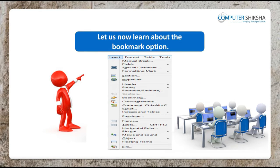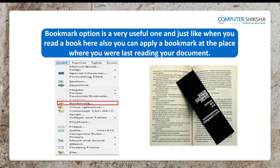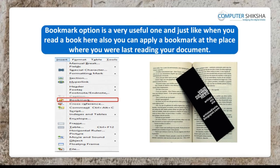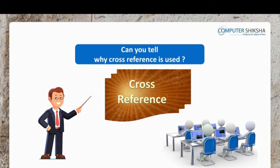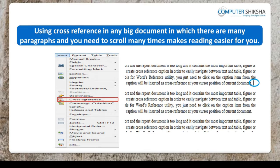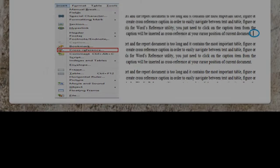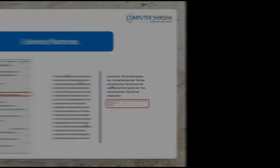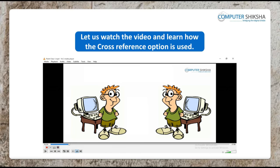Let us now learn about the bookmark option. Do you know why we use the bookmark option? Bookmark option is very useful, and just like when you read a book, here also you can apply a bookmark at the place where you were last reading your document. We will also now learn about cross-referencing. Using cross-reference in any big document in which there are many paragraphs and you need to scroll many times makes reading easier for you. Cross-reference also works on bookmark, endnote, footnote, or the header and footer section.